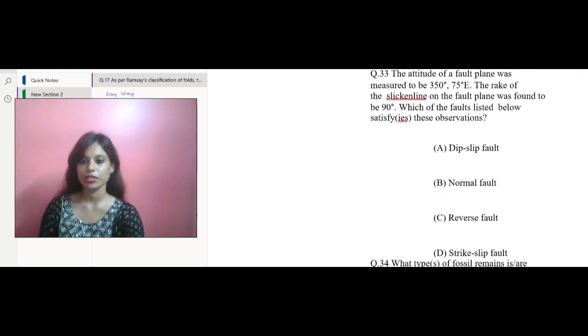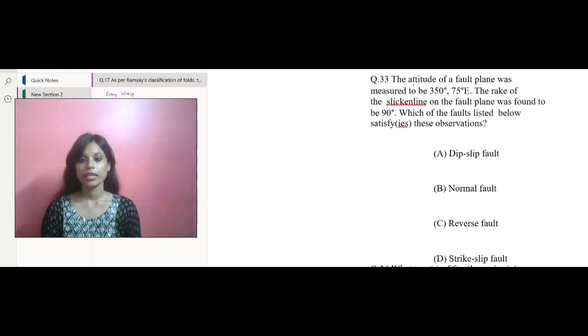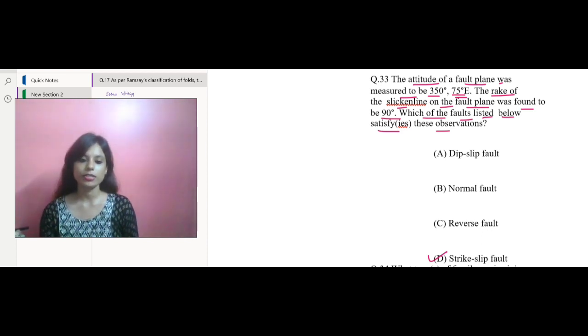Let's move to the next question. It says that the altitude of a fault plane was measured to be 350 degrees, 75 degrees east. The rake of the slicken line on the fault plane was found to be 90 degrees. Which of the faults listed below satisfies these observations? Your answer would be strike-slip fault. The observations suggest that the fault plane has a dip of 75 degrees to the east, which is measured from horizontal and a rake of 90 degrees.